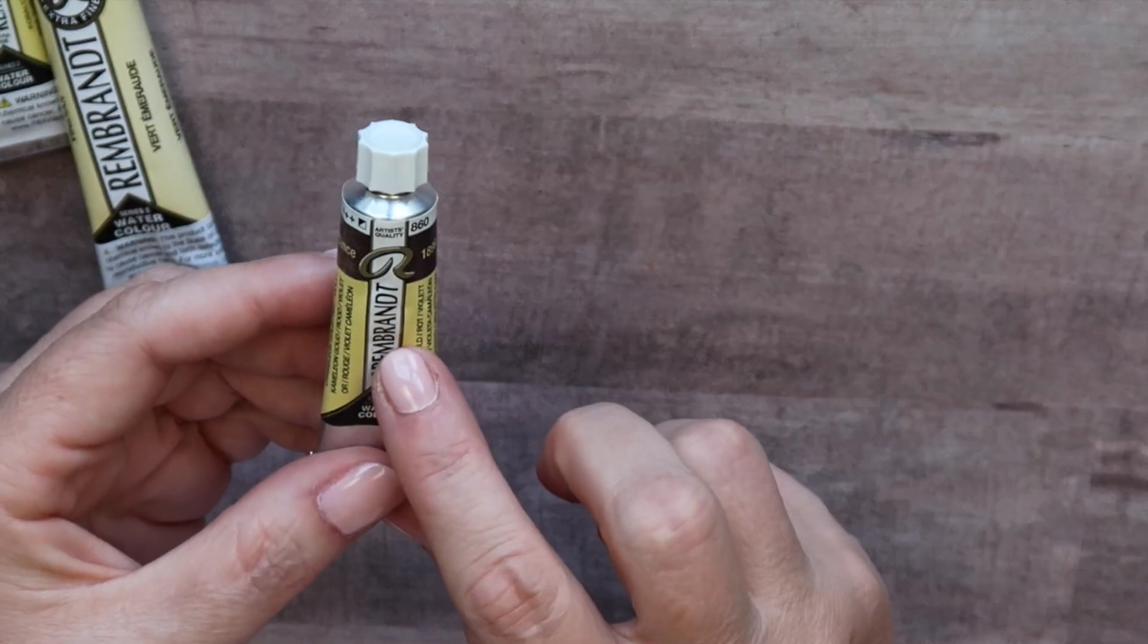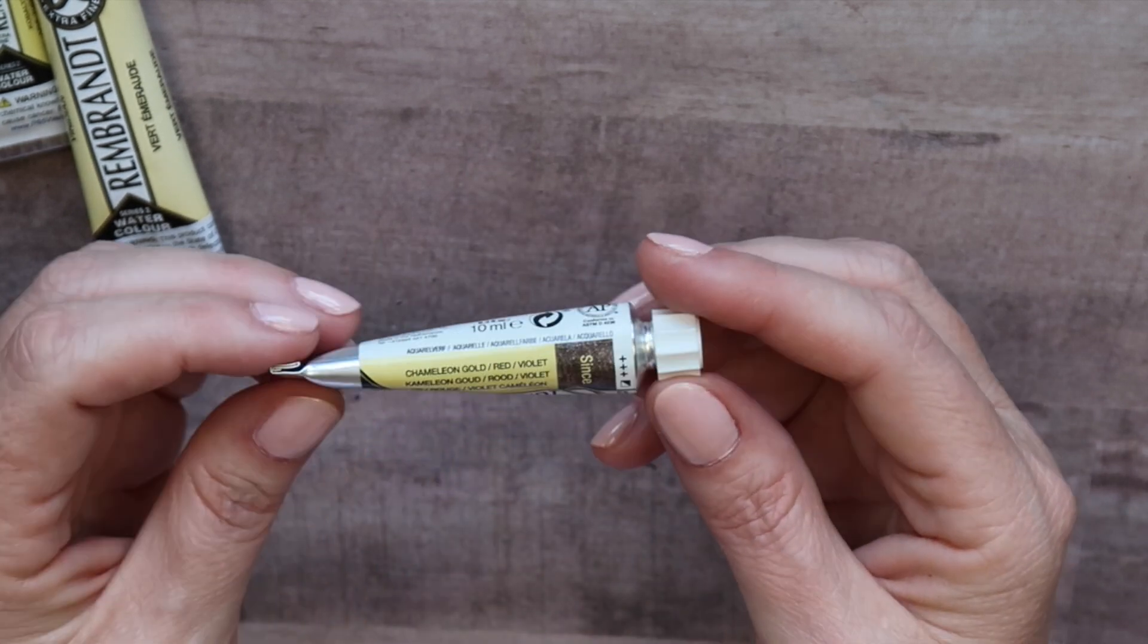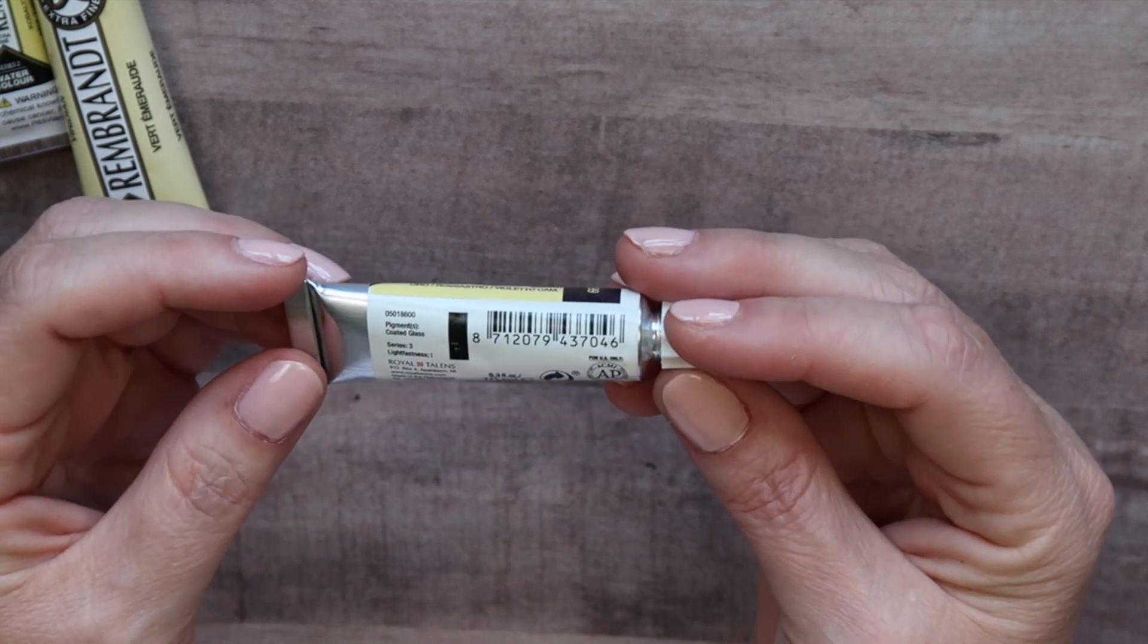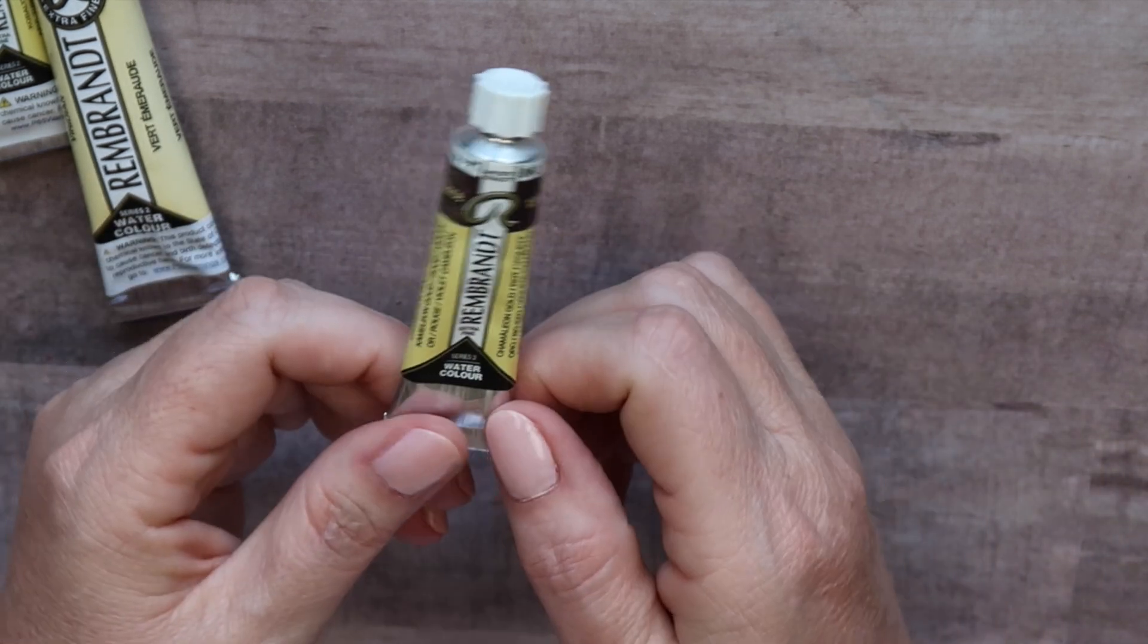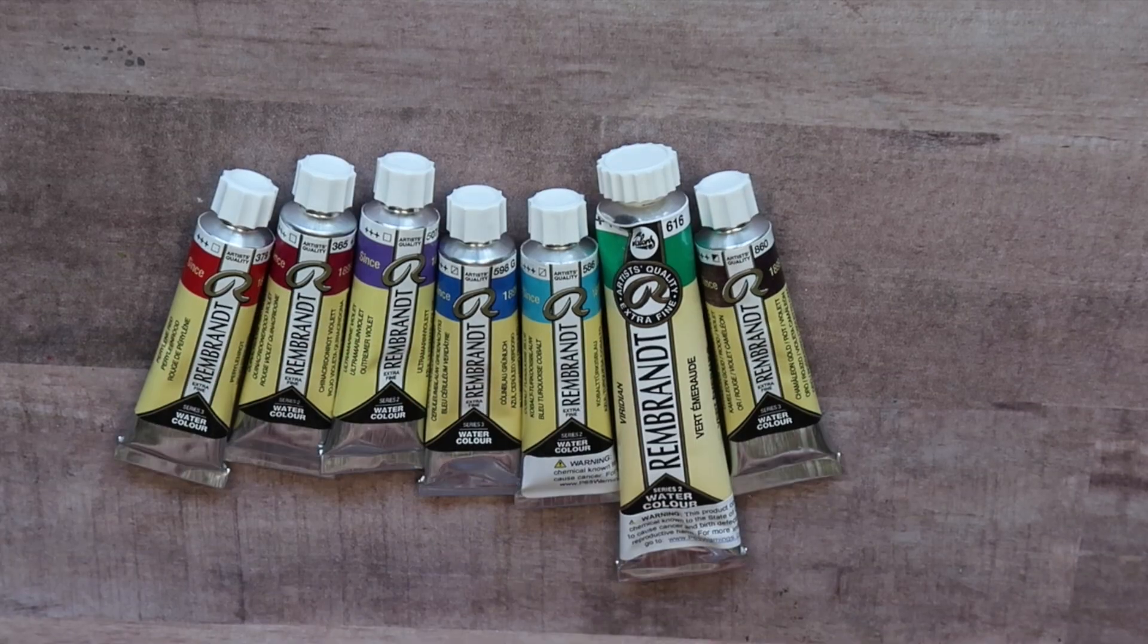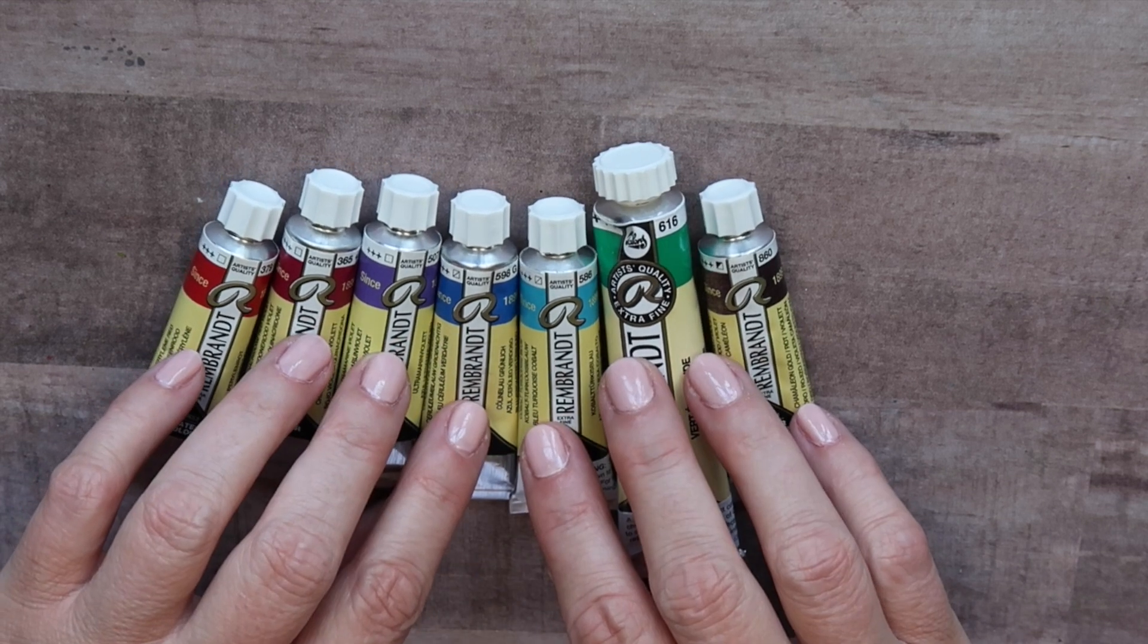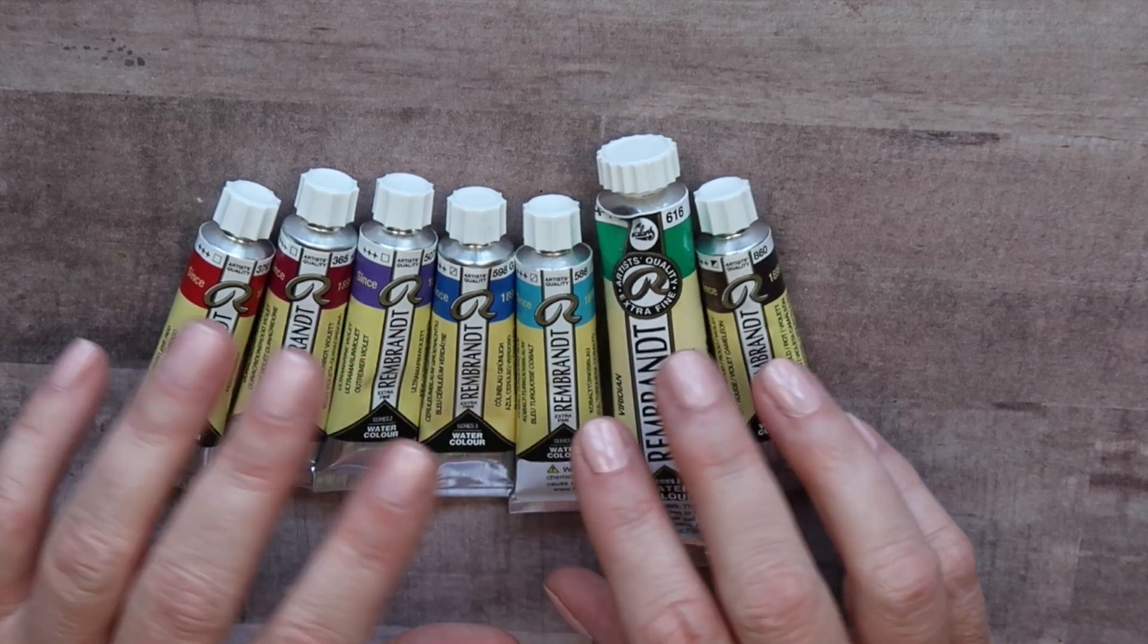And then lastly, this is the free paint that I got from ordering the other paints. This is Chameleon Gold Red Violet. And this is made from coated glass. And so you can see I've already poured out a sample for my friend. I was so excited to share some of my favorites with her. So I will be swatching these in an upcoming video. And please let me know if you would like me to swatch these in a video quickly, or if you would like me to share a video of all my favorite Rembrandt paints.